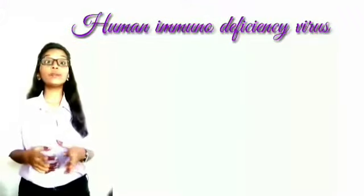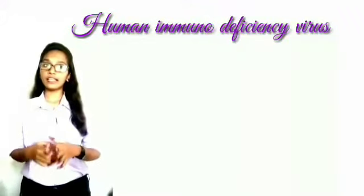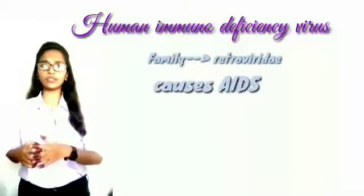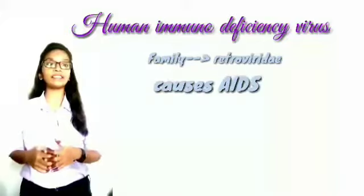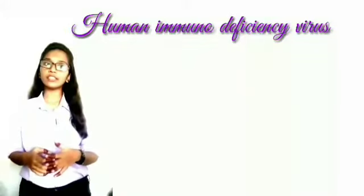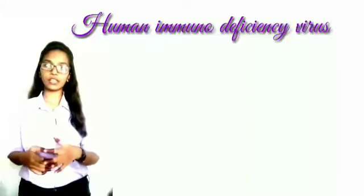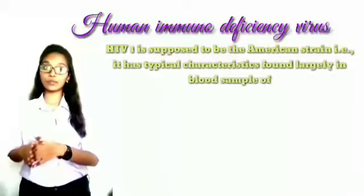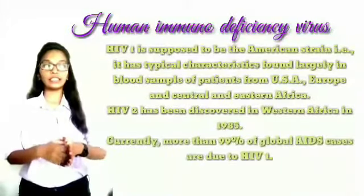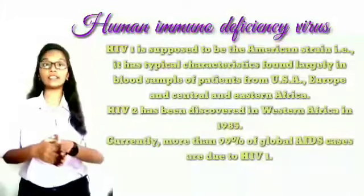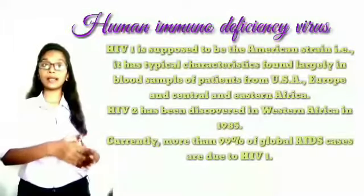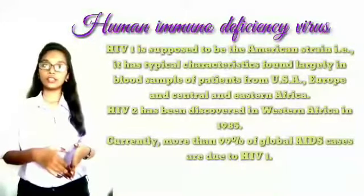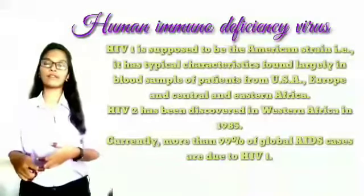HIV, that is human immunodeficiency virus, belonging to family Retroviridae, causes acquired immunodeficiency syndrome that is AIDS in humans. It is divided into two major types: HIV 1 and HIV 2. HIV 1 is supposed to be the American strain, with typical characteristics found largely in the blood samples of patients of USA, Europe, and Central and Eastern Africa.